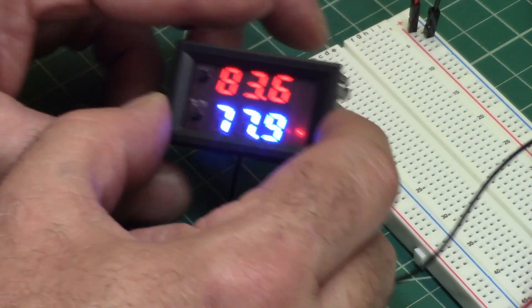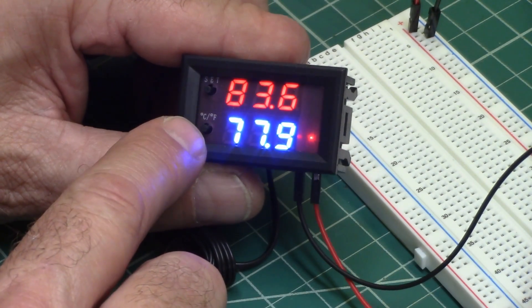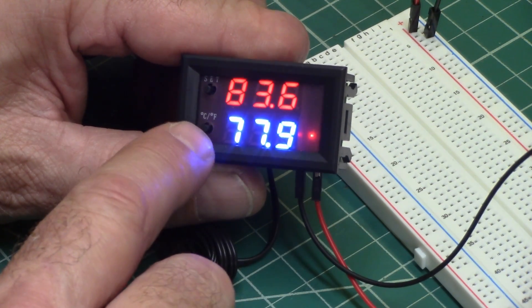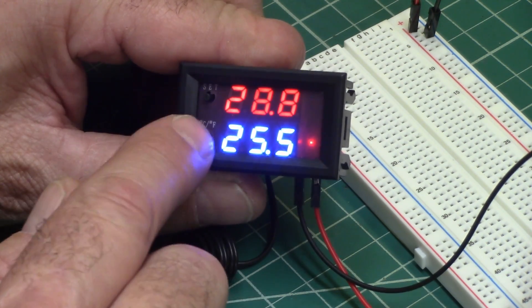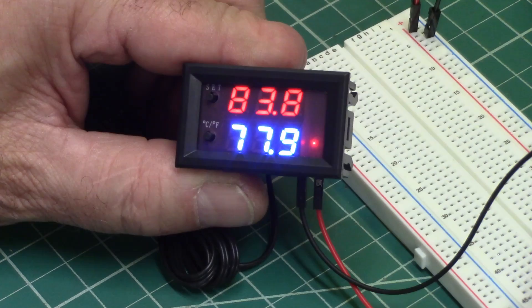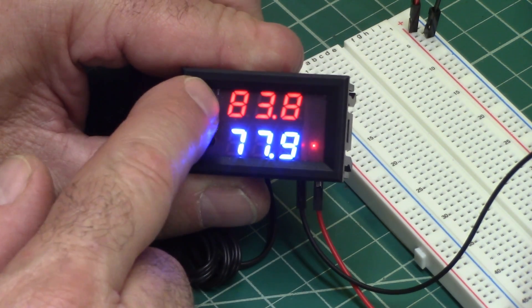So the main point of this video is to show you how to program these. Now, to switch from Celsius to Fahrenheit is very easy. There's a C and F button on the front. You just touch that, and you go from Celsius to Fahrenheit. And then to set the temperature that you want it to be, you just hit the set button.